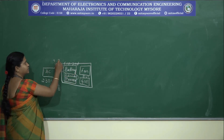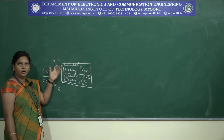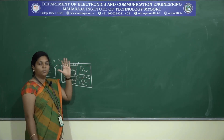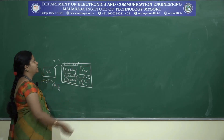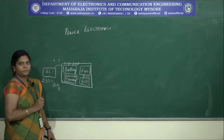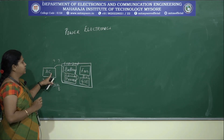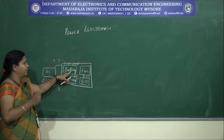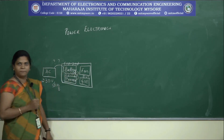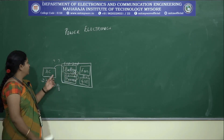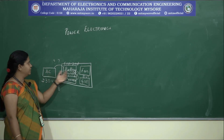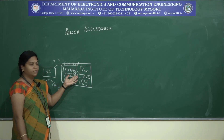How does this work? In order to understand how the electronic gadgets we use are working, we need to study the subject known as power electronics. Here we are dealing with AC power, and a battery is a DC source. So when we are converting from AC to DC, both AC and DC are forms of power.